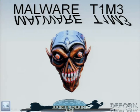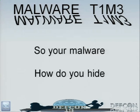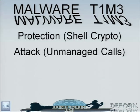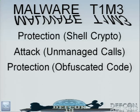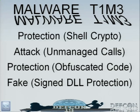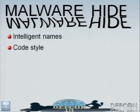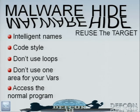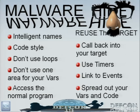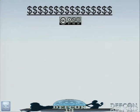Your malware — there's 1% of us that make malware. How do you hide? Use the same things: shells, cryptos. If they call unmanaged code, you break out and attack. Use obfuscated code. Sign DLL protection to make your target feel secure. Use intelligent names like your target, coding style like your target — blend in. You're writing source code, so make it pretty, don't use obvious patterns. These people hunting malware are going to look for a spinning loop, so don't do it. Make them work for their millions of dollars.